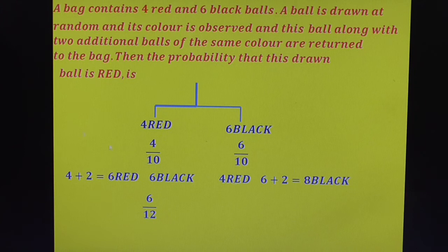The final condition still depends on red. So what is the probability to get a red ball in this condition? The total balls are 8 plus 4, which is 12, and red balls are 4. Therefore, the probability to get a red ball is 4 by 12.